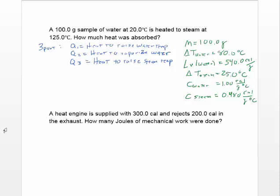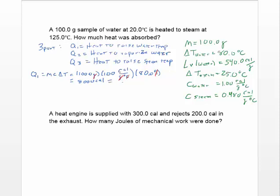For Q1, using Q = mcΔT: mass = 100 g, C_water = 1.00 cal/g·°C, ΔT = 80°C. Degrees Celsius and grams cancel, giving 8,000 calories, or 8 kilocalories.